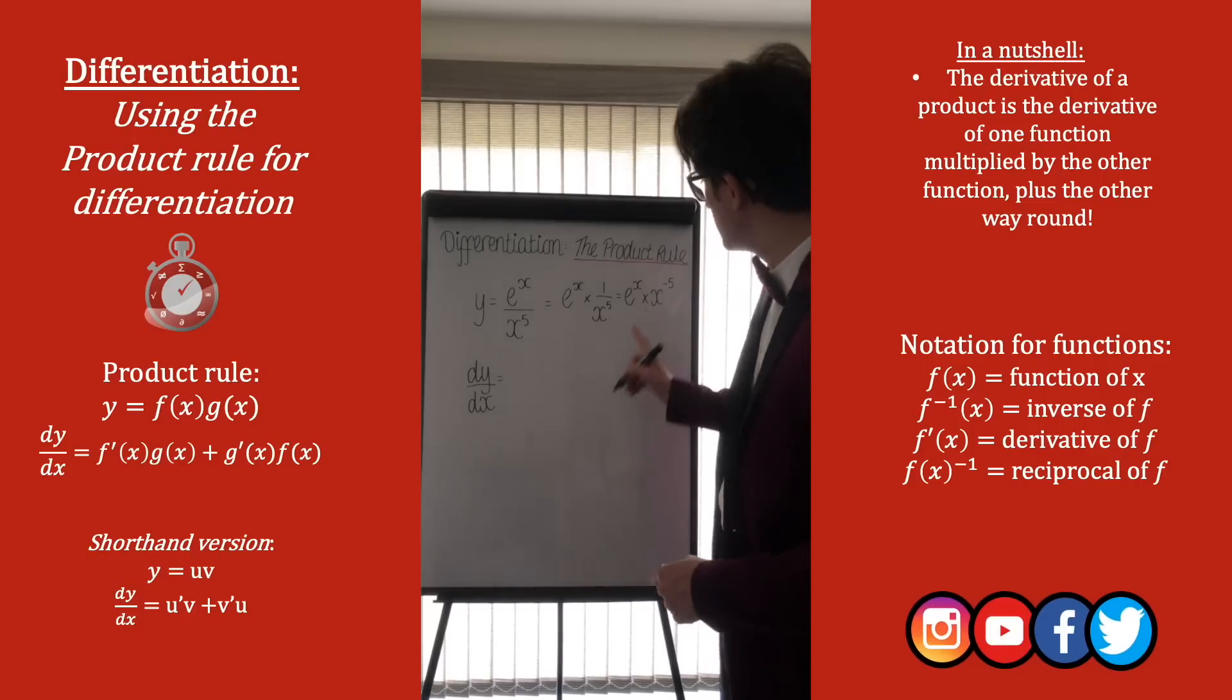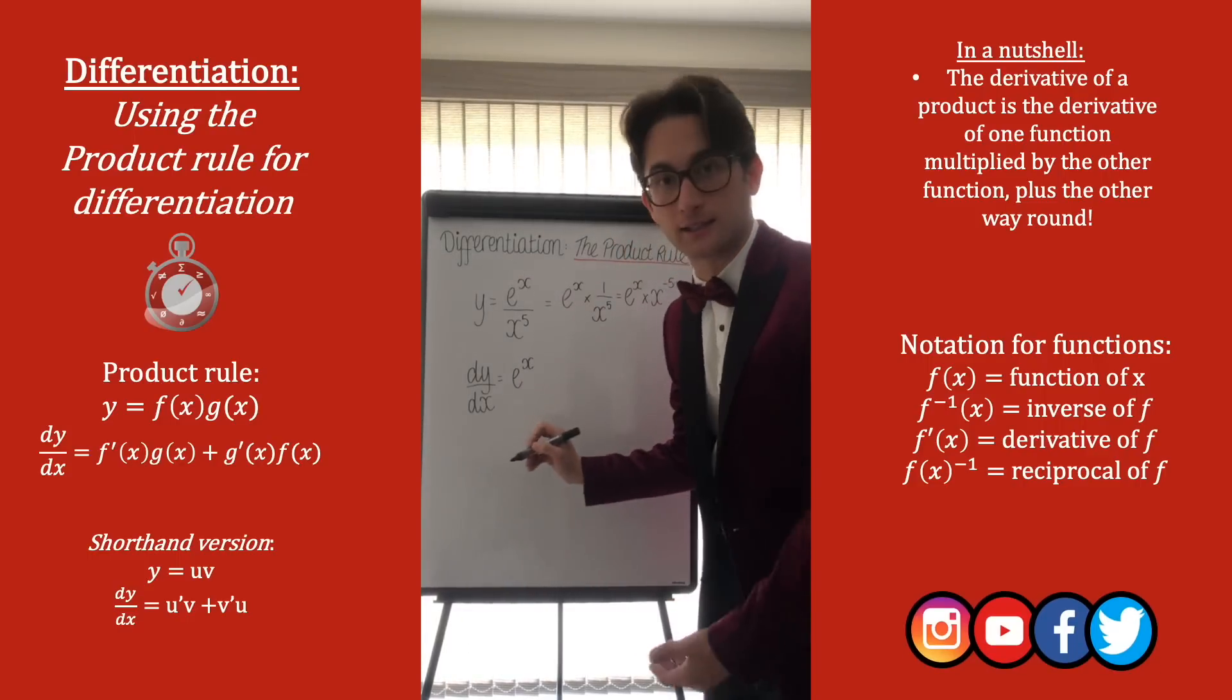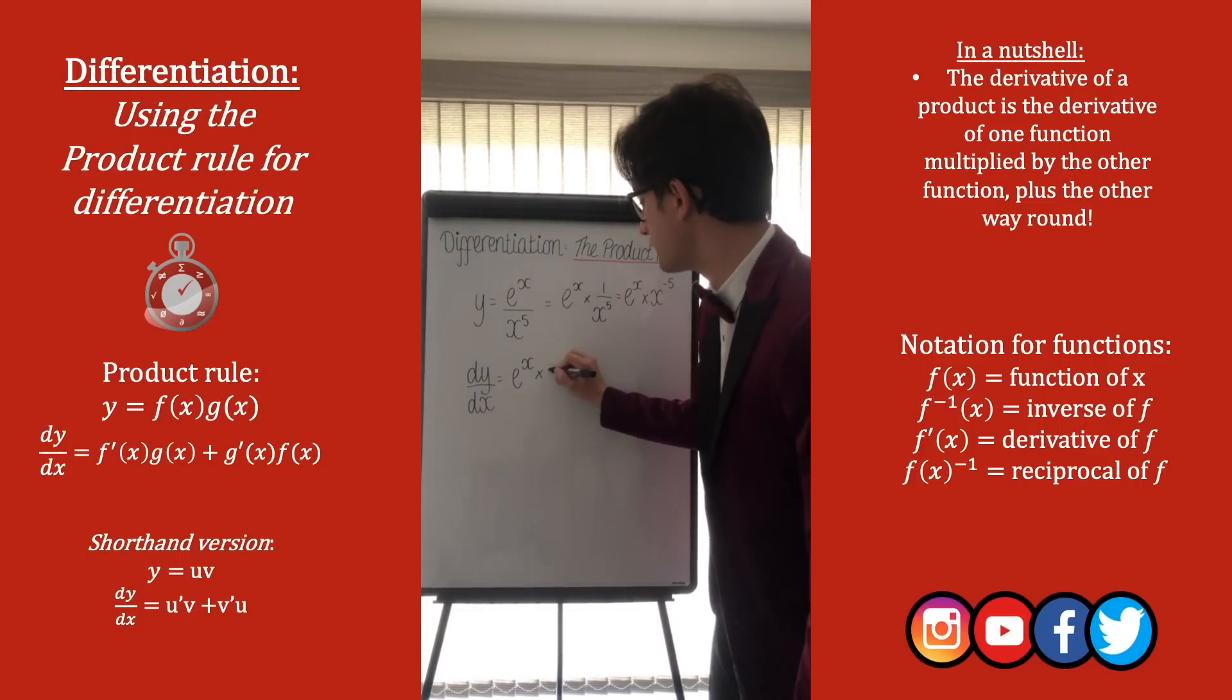Let's look at it being e to the x times x to the minus 5, differentiate the first, e to the x differentiates to e to the x, and times it by x to the minus 5.